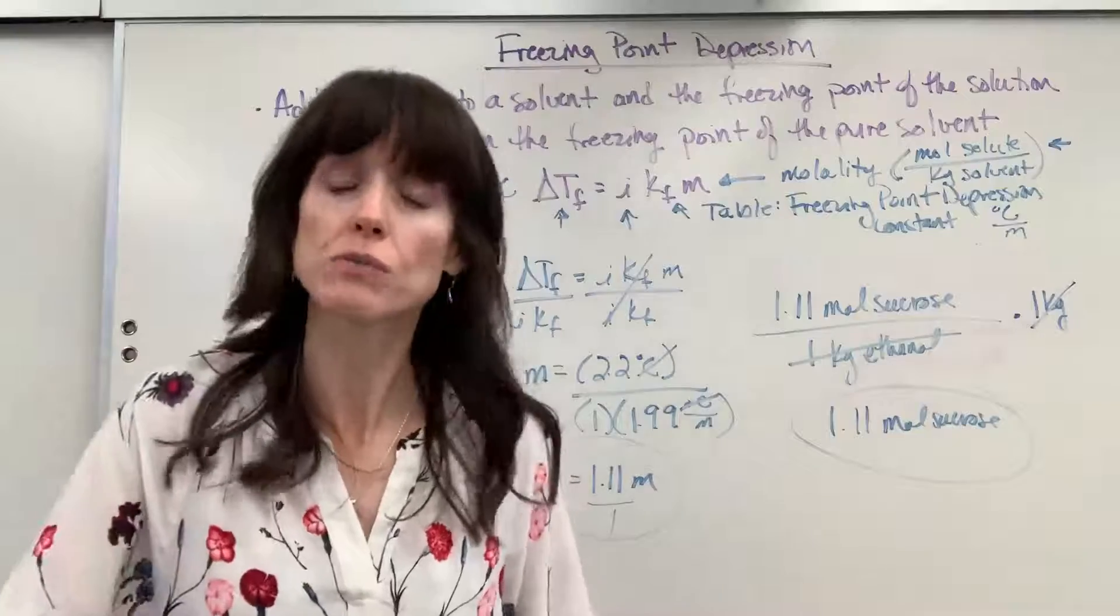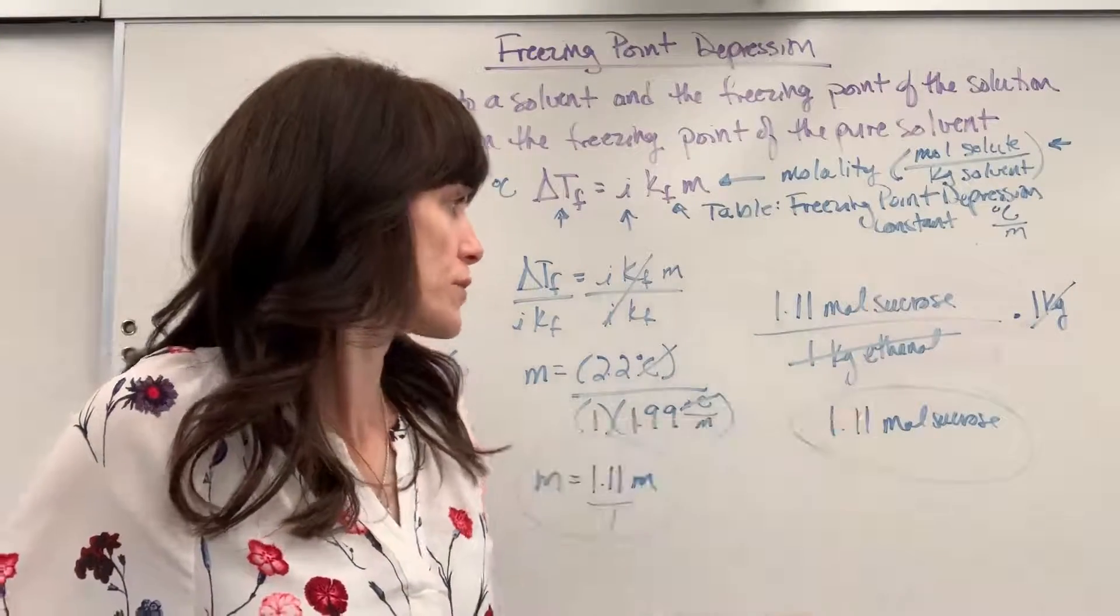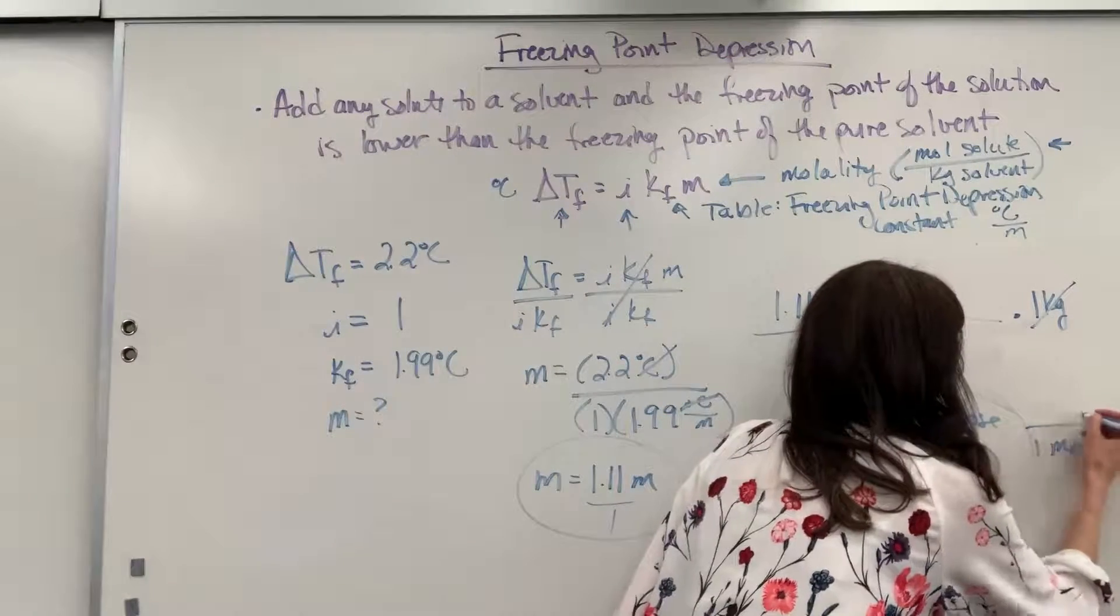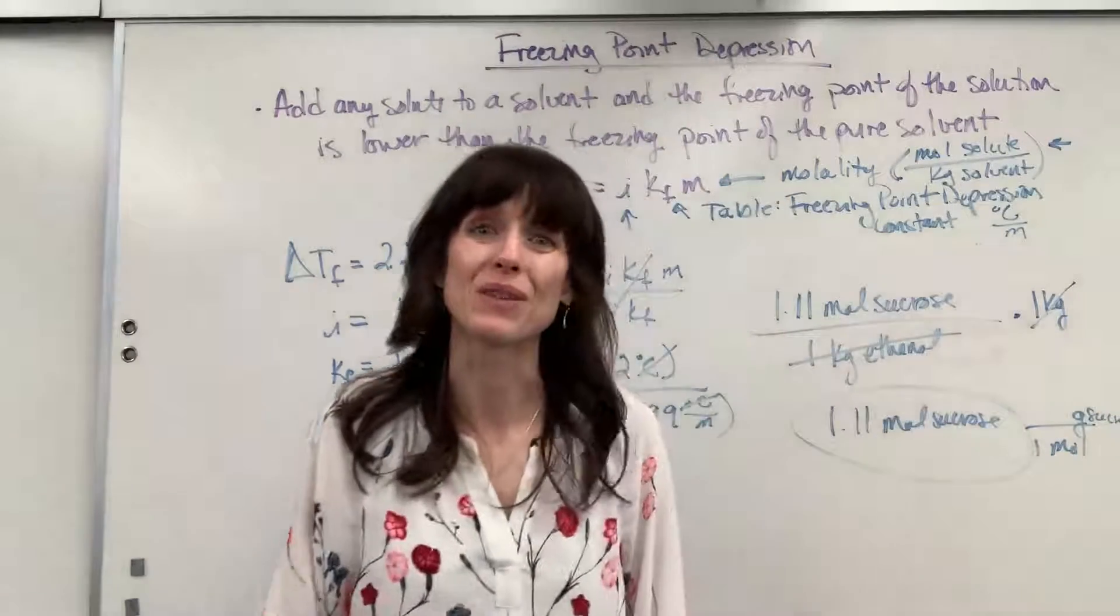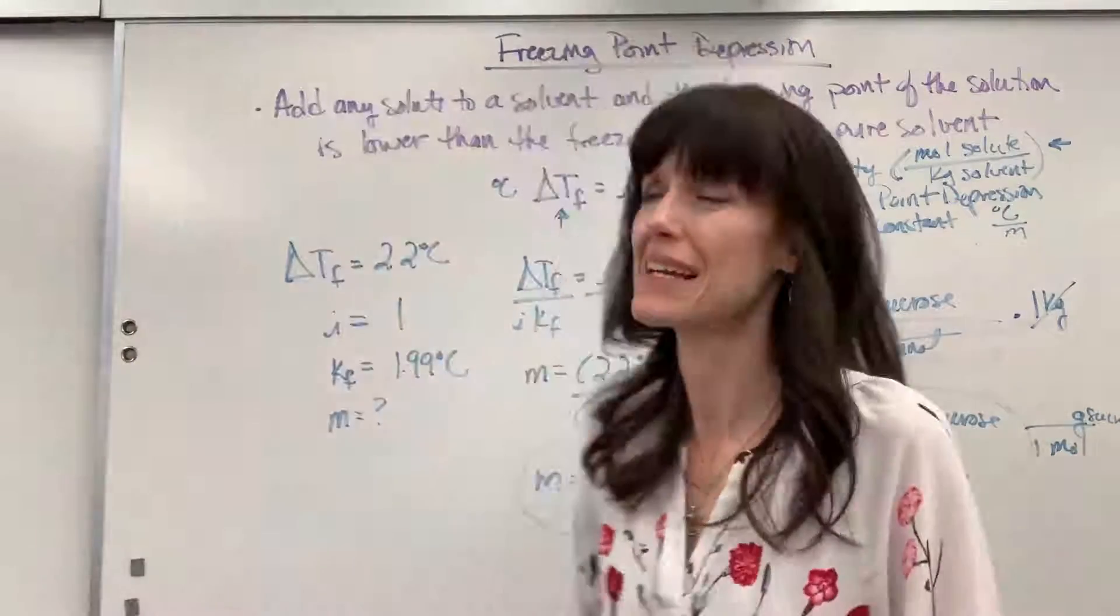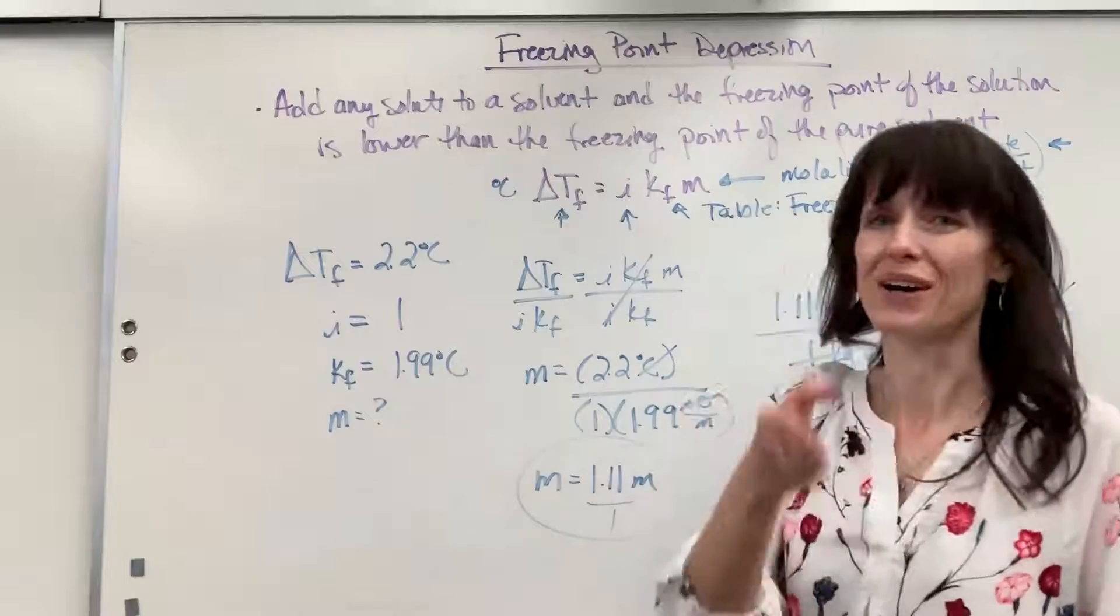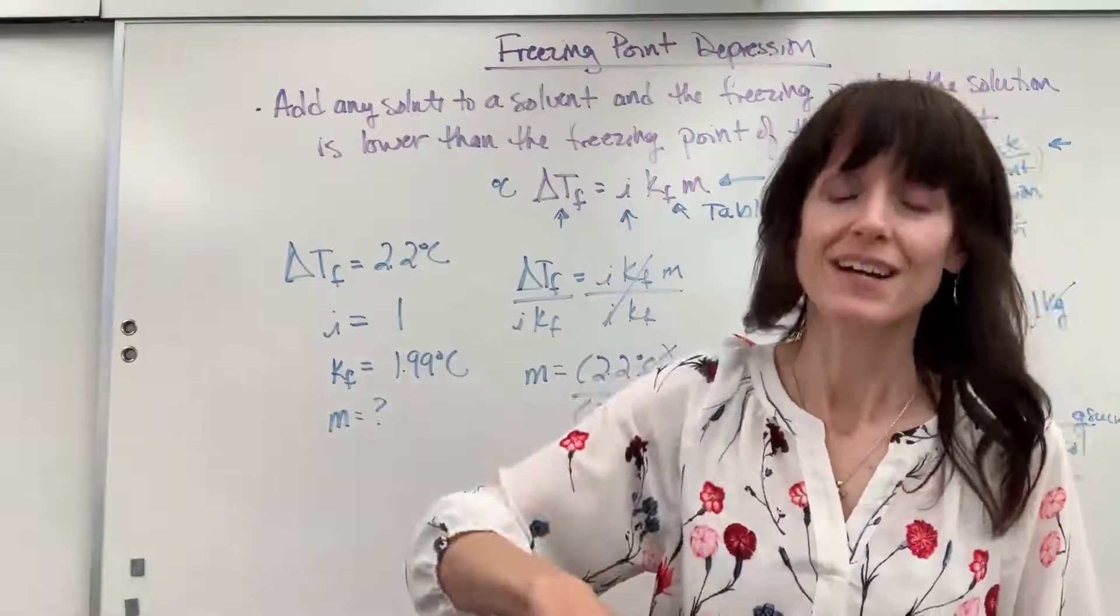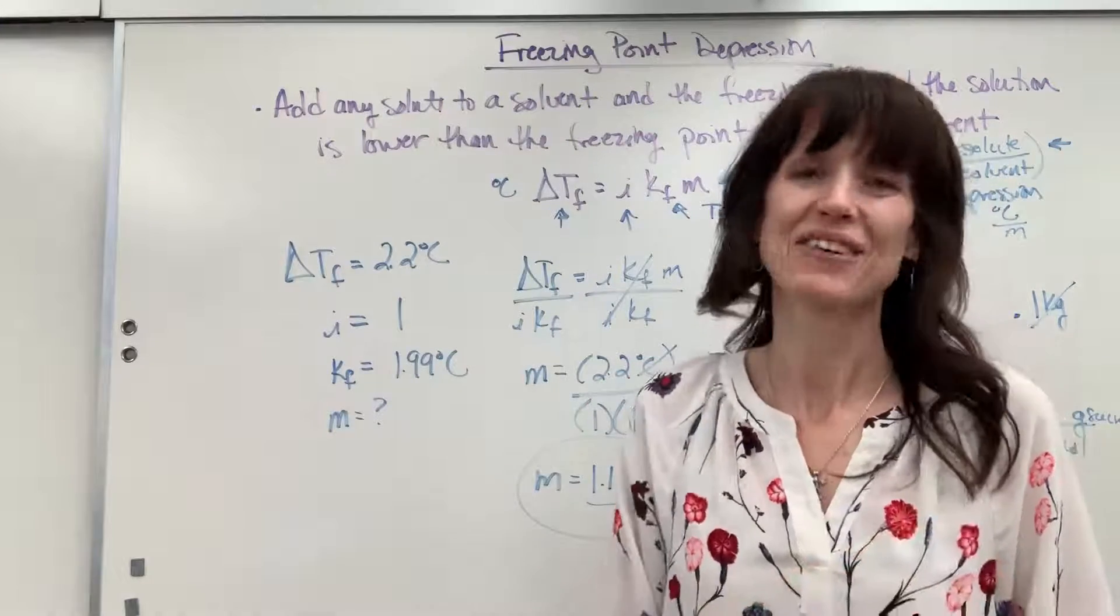Now, if they wanted grams, you just use molar mass. You would find the chemical formula for sucrose, do the molar mass, and go from one mole to the grams of the sucrose. Multiply that and that would give you the grams. Very good. So two examples and some explanation on freezing point depression. Whenever you add a solute to a solvent, that temperature is going to be lower than the freezing point of the pure solvent.